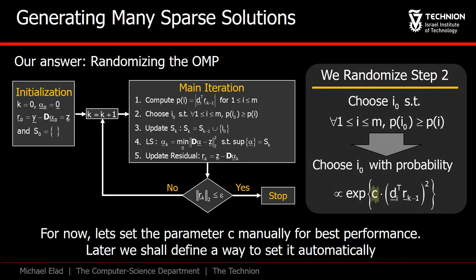There is a parameter c in setting these probabilities. Let's assume for now that it is set manually somehow. We call this algorithm the random OMP. Of course, we will have to run it j times to get j candidate solutions.